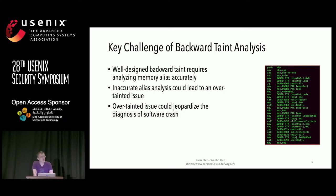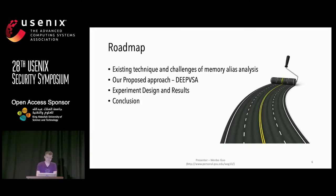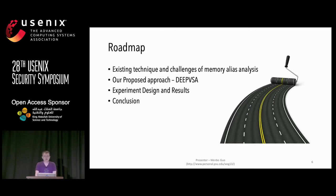To perform an accurate backward taint analysis, alias analysis is required. An inaccurate alias analysis will lead to an over-taint issue. This issue could jeopardize the diagnosis of software failure. In this talk, I will first introduce the existing work of memory alias identification technique and show you the challenges. Motivated by this, I will then introduce our approach, which leverages the magic of deep learning to identify memory aliases and thus facilitate root cause diagnosis.